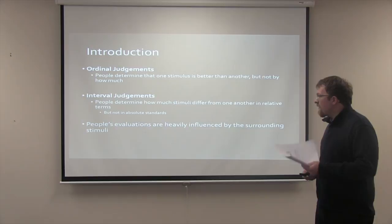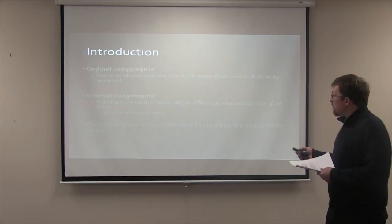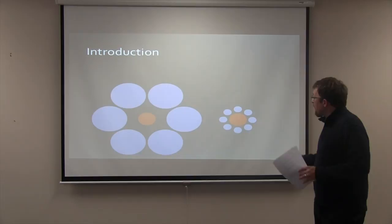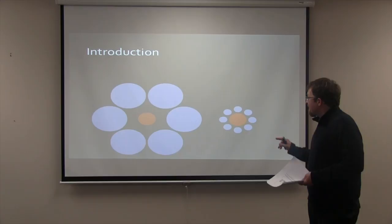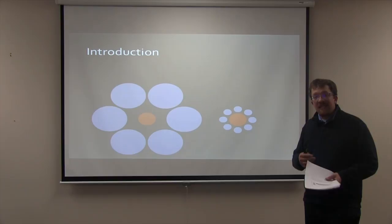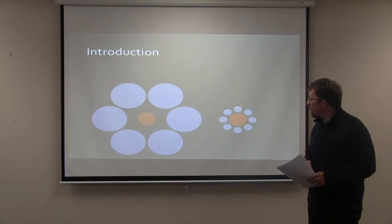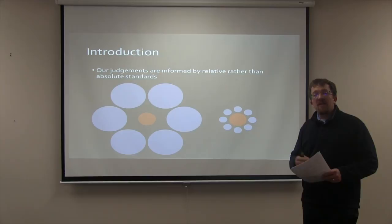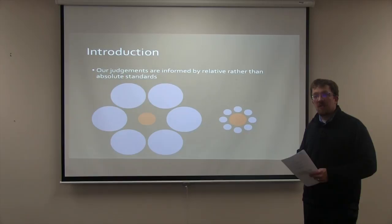Essentially, people's evaluations are heavily influenced by surrounding context. To further demonstrate this, we can look at a commonly used circle illusion within psychology. This illusion demonstrates that despite the orange circles being the exact same size, the circle on the right looks much larger than the circle on the left. This is because we tend to judge circles as being smaller when they are surrounded by larger circles. The takeaway is that our judgments are often informed by relative information, such as the surrounding circles, rather than absolute information, such as the actual size of the orange circles.